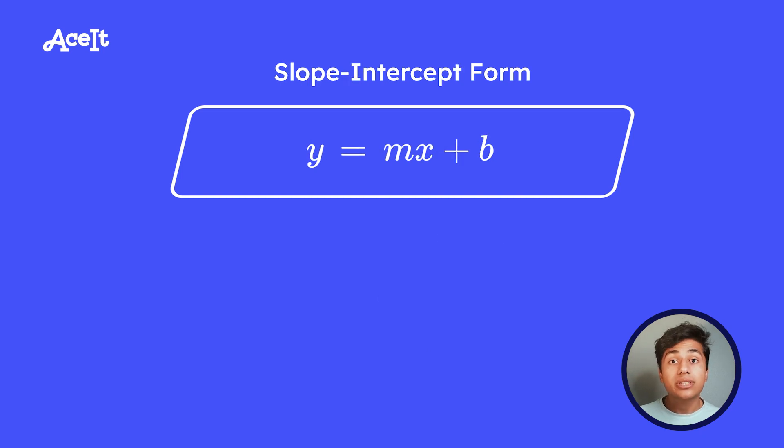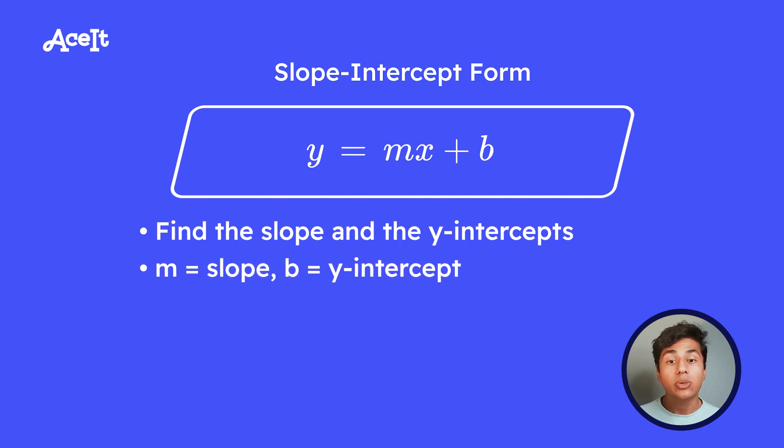Now this next form makes it easier to find the slope and the y-intercept. And this is known as slope-intercept form, where you have y equals mx plus b. And in this context, m is equal to your slope, and b is equal to your y-intercept. And this is probably the linear equation that you're most familiar with, and it's especially useful for graphing purposes.